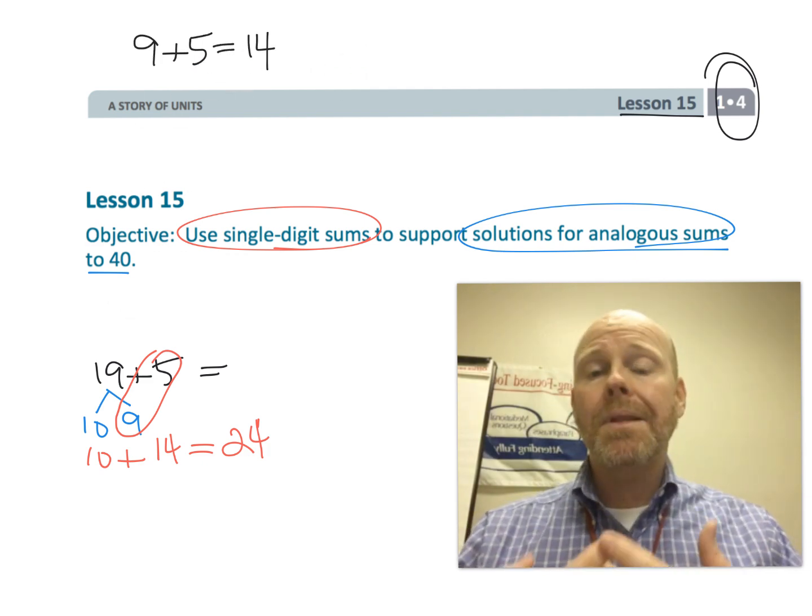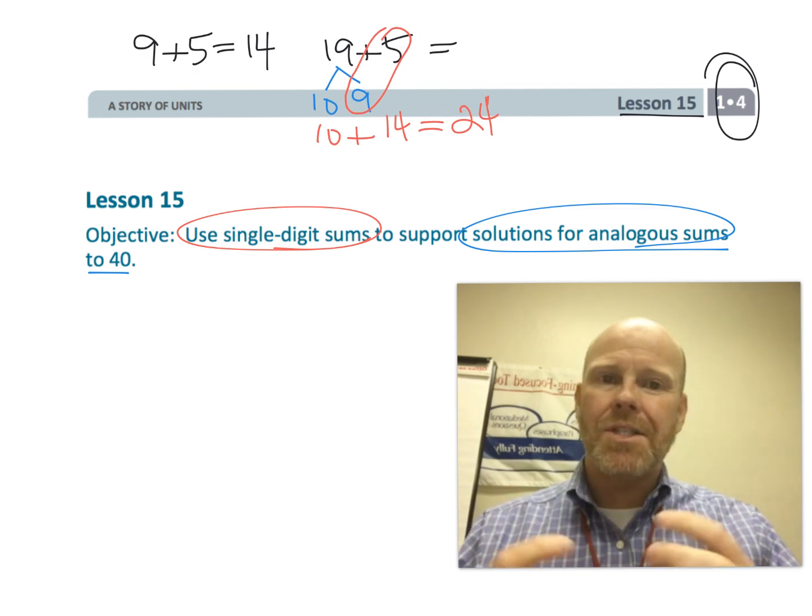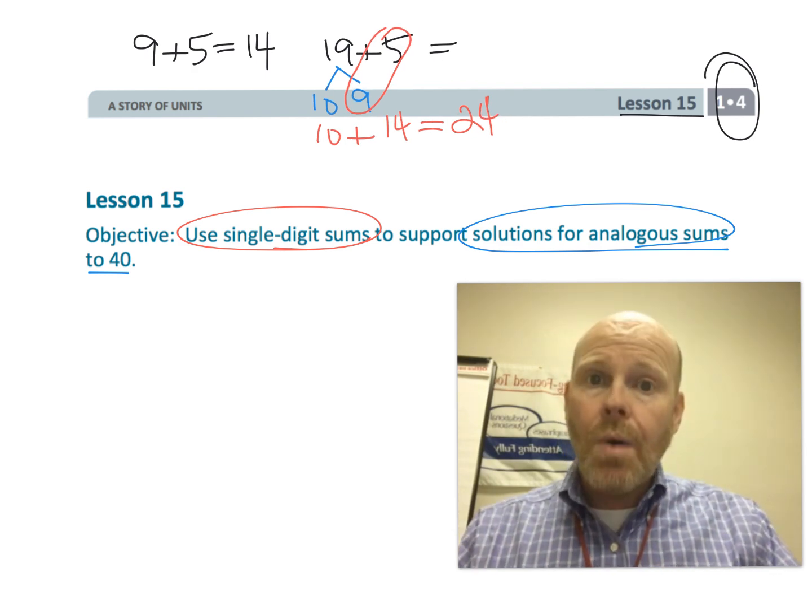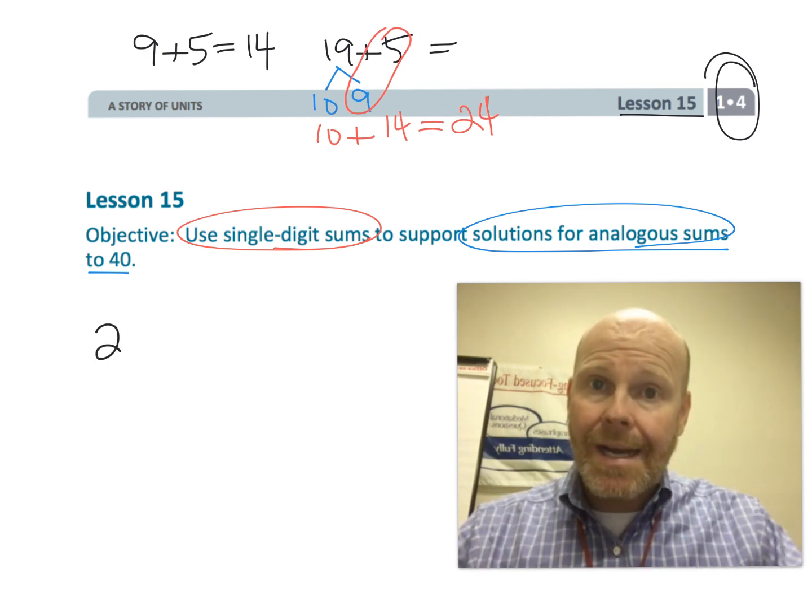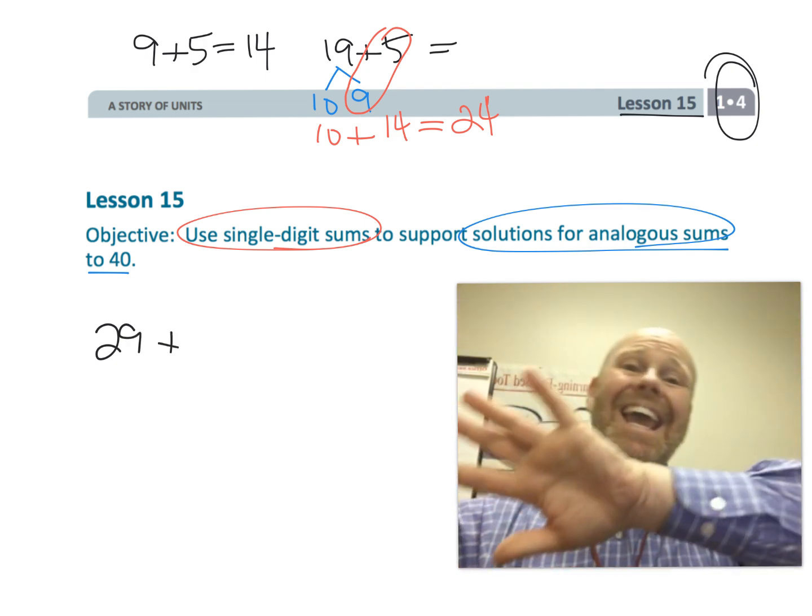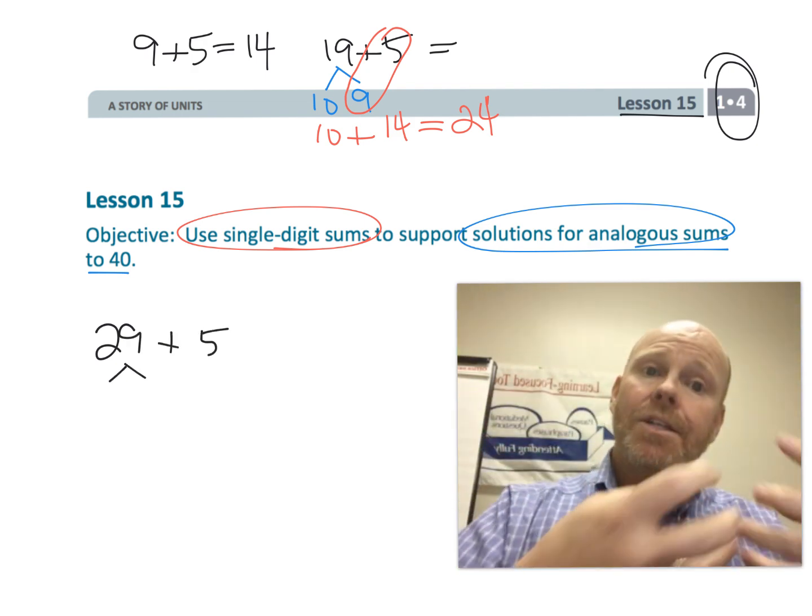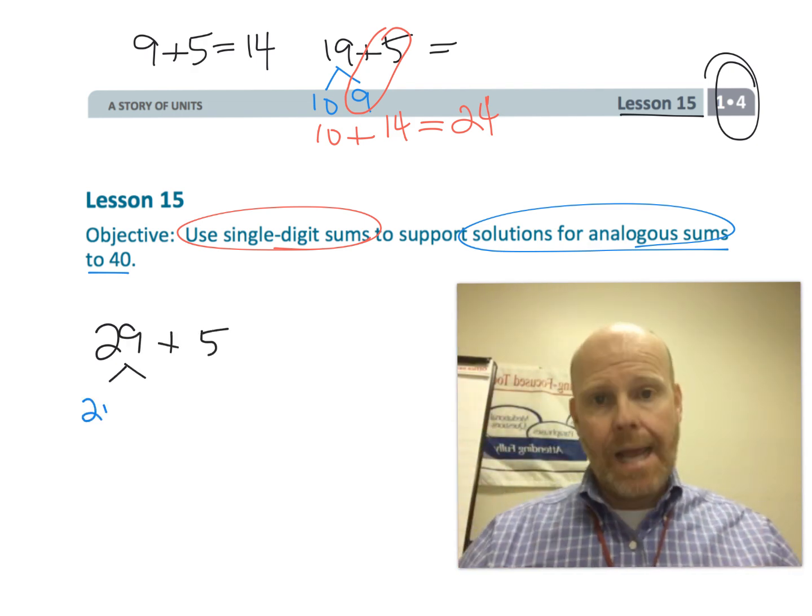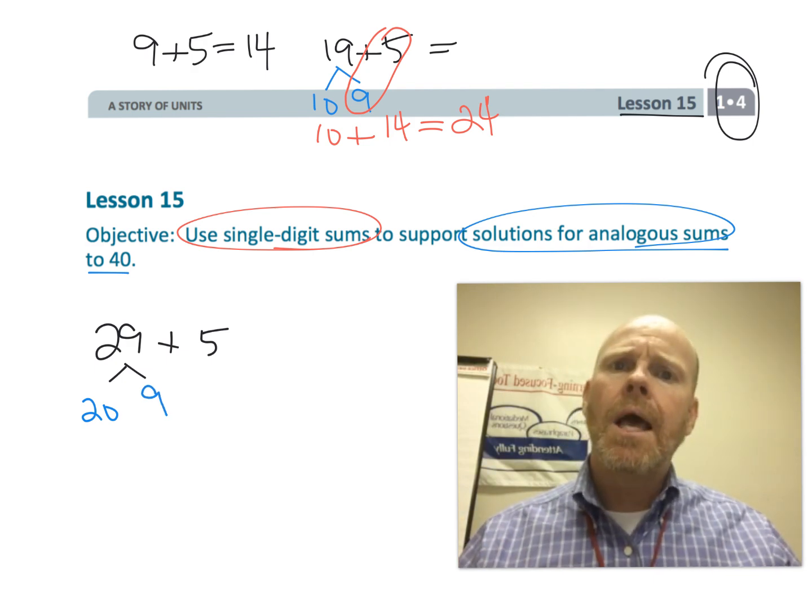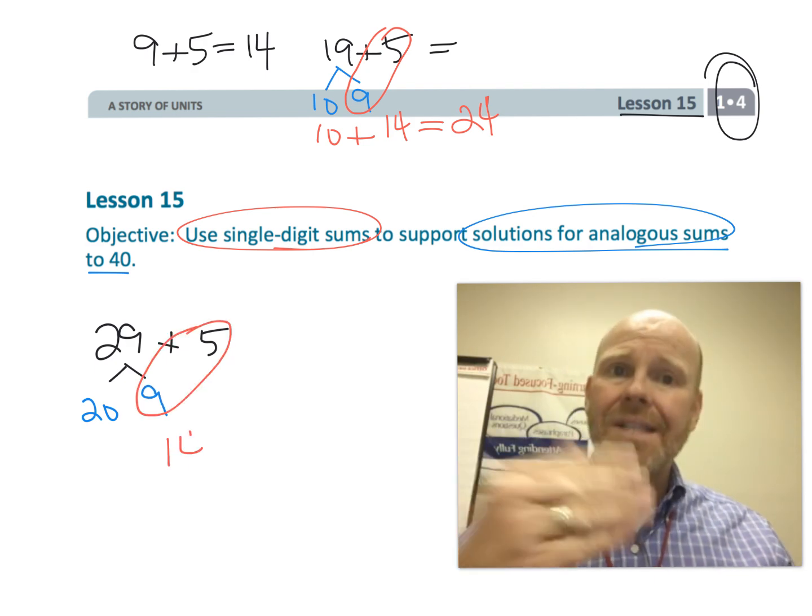The students are not going to be using the standard algorithm yet. Really what we want is for students to be developing number sense, particularly with place value. So we don't want them to just see 29 as 29, we want students to see that 29 as really 20 and 9.